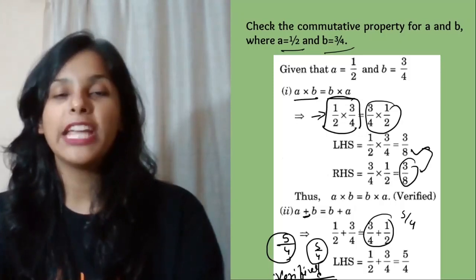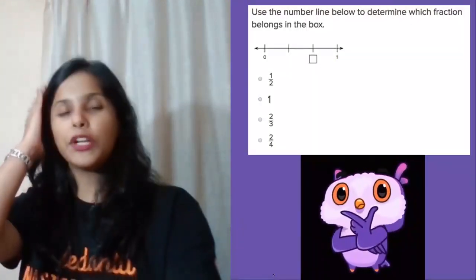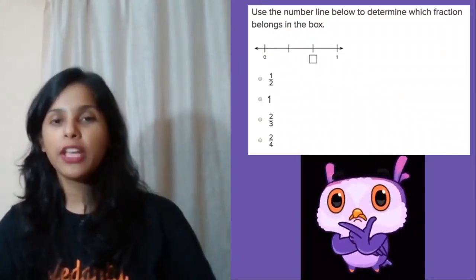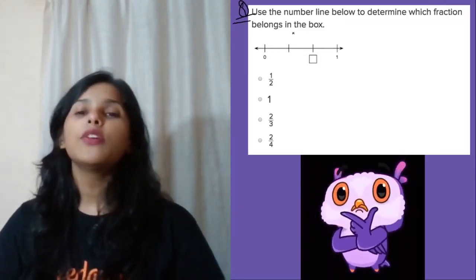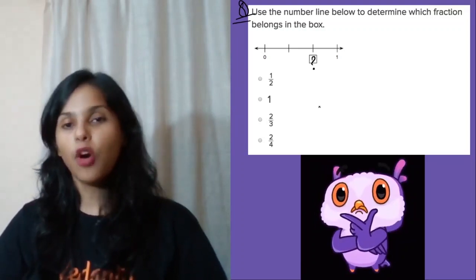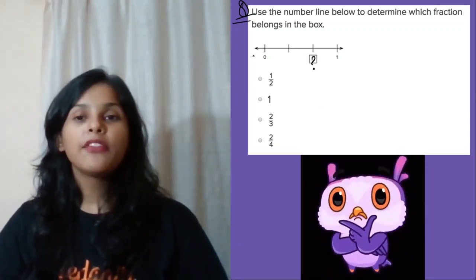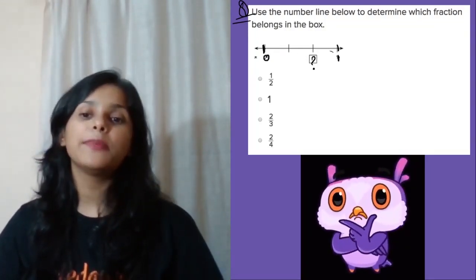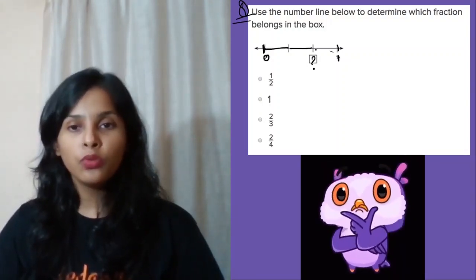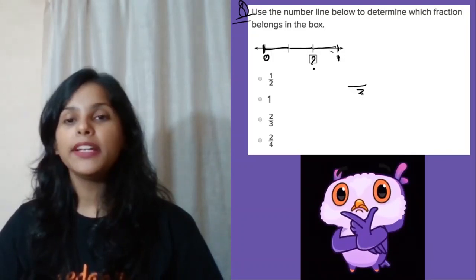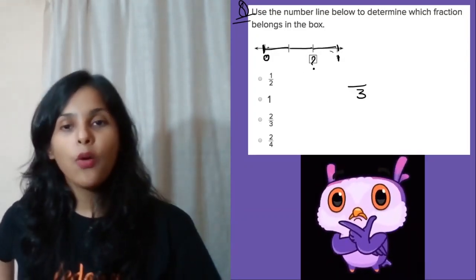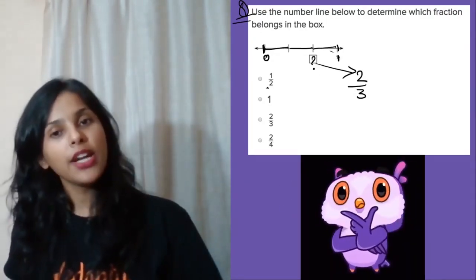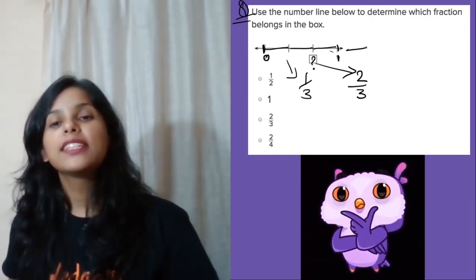Here is another question frequently asked in MCQ and short answer type questions. You have to find the value shown in the box on the number line. Between 0 and 1, there are 3 equal parts, so the denominator is 3. The marked points are 1 by 3, 2 by 3, and 3 by 3. The answer is 2 by 3.